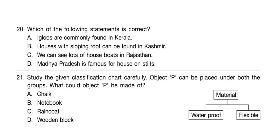Which of the following statements is correct? A: Igloos are commonly found in Kerala. B: Houses with sloping roof can be found in Kashmir. C: We can see lots of houseboats in Rajasthan. And D: Madhya Pradesh is famous for house on stilts.